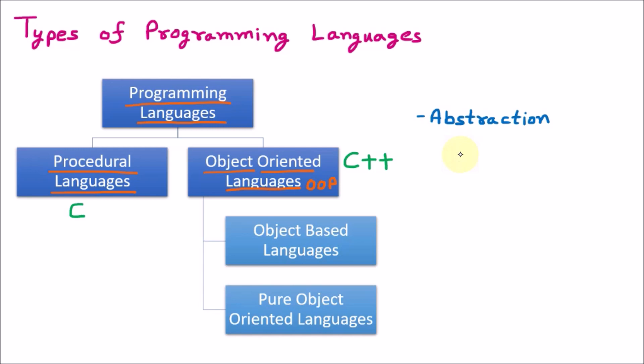But in C++, there are the concepts of public, protected, and private. We can make things private, meaning only we can access them. Protected means derived classes can access. Public means everybody can access. With the help of these access specifiers, we can hide things.